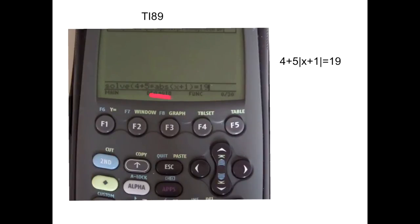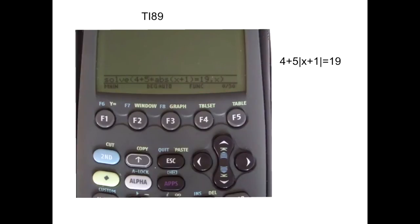Now enter x plus 1, close parentheses, equals 19. But we're not done. You have to enter comma x, close parentheses. This lets the calculator know that we're solving for x. Now hit enter on the calculator to find the solution.